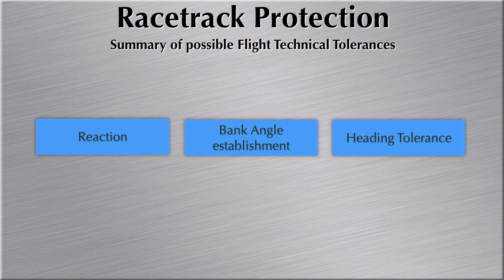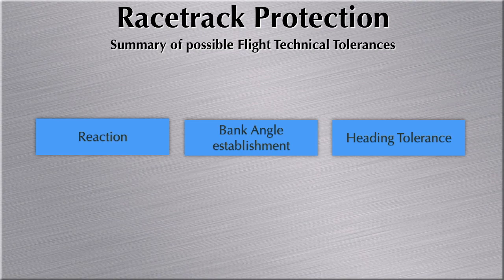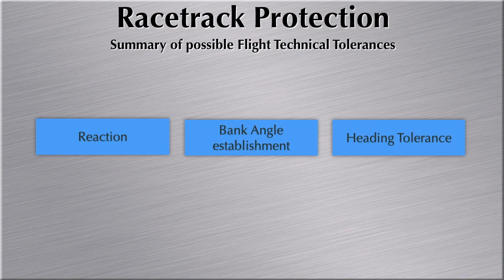Flight technical tolerances deal with reaction time, bank establishment time, and heading tolerance. For reaction, we distinguish between quick and slower reaction. For bank establishment, we count five degrees of bank established per one second — so for a 25-degree bank angle as used in racetrack and holding procedures, it takes five seconds to establish the full bank. For simplicity, we assume straight flight until the bank is fully established. Finally, the pilot must be given a heading tolerance of five degrees left and right when there is no track guidance. Let's first look at the fast-reacting airplane.